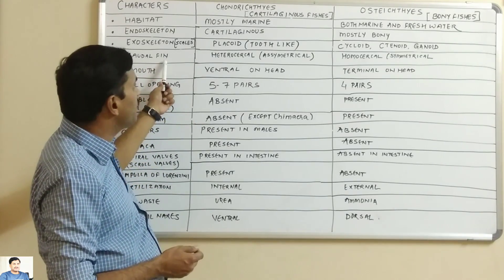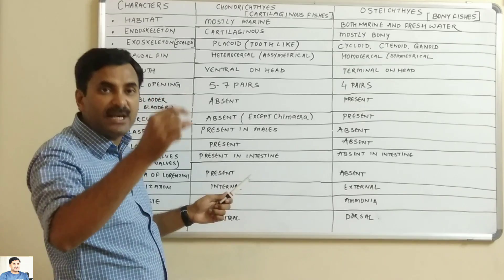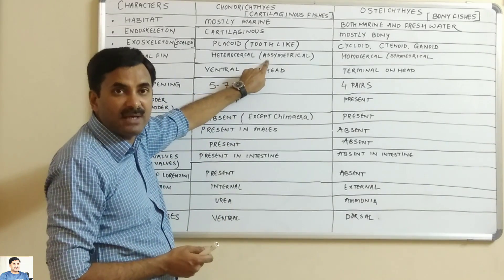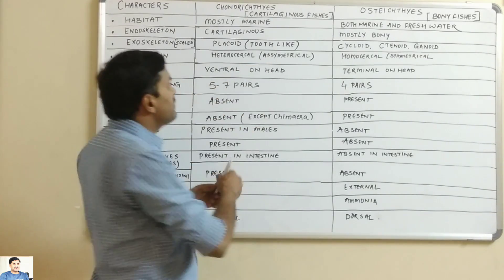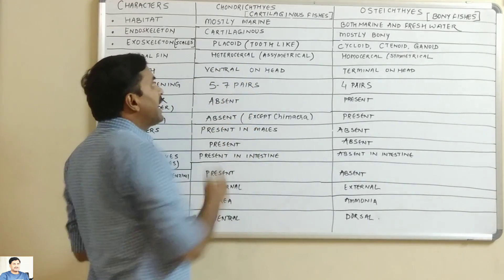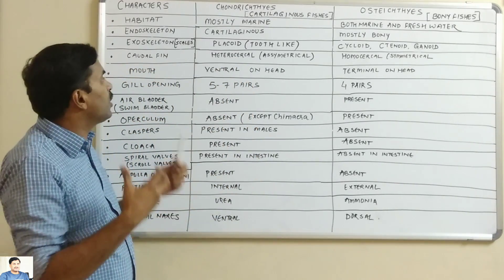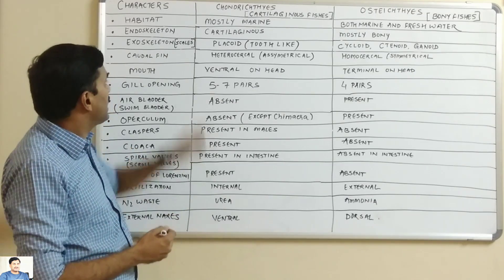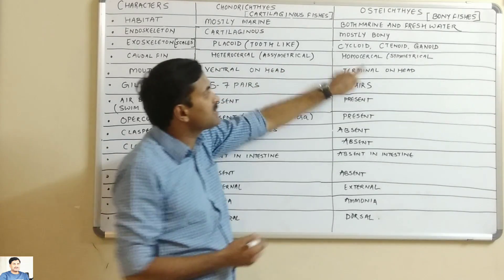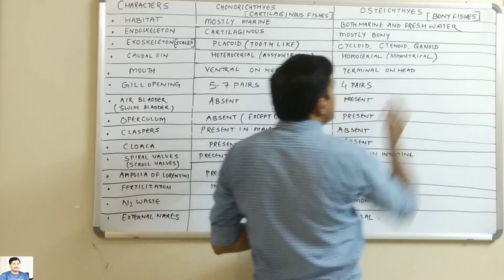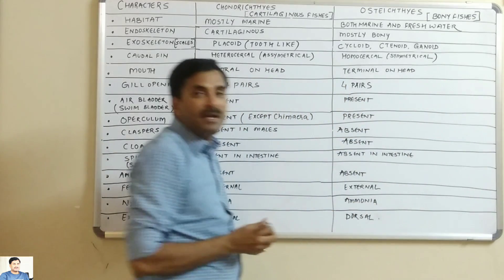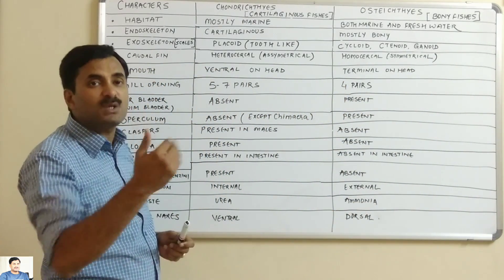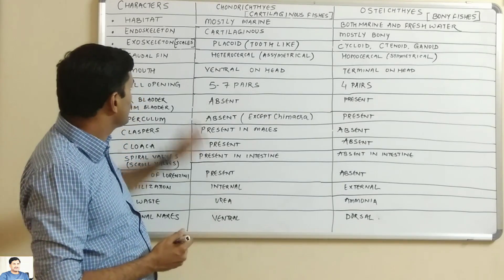Now the caudal fin — caudal means the tail fin. In cartilaginous fishes, the tail fin is asymmetrical, and this is called a heterocercal tail. In bony fishes, the caudal fin is symmetrical, and hence we use the term homocercal tail.